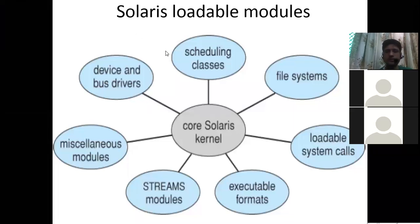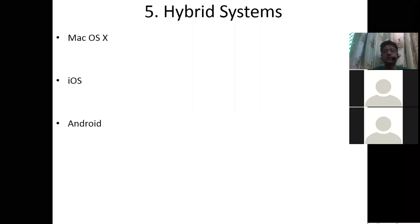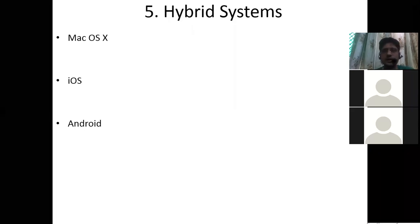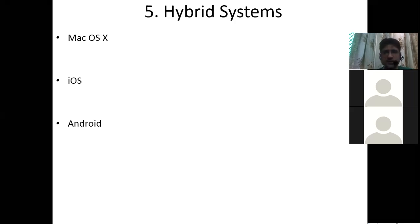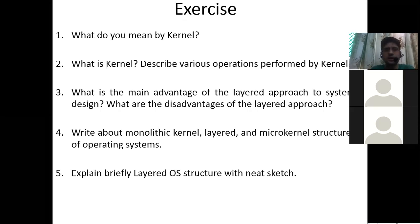Next we have hybrid systems. Mac OS, iOS, and Android are hybrid systems, meaning they use multiple types of architecture in one — some flavor of microkernel, some flavor of modular operating system, and some flavor of layered operating system. These hybrid systems are operating systems like Mac, iOS, and Android.